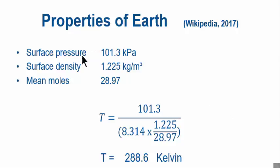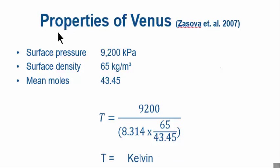Let's do Earth: surface pressure of Earth 101.3 kPa, surface density 1.225, mean molecular weight 28.97. I got these figures, properties of Earth, from Wikipedia, and the ones from Venus from Zasova 2007. I've been a bit unfair here, I think I'll have to calculate it.